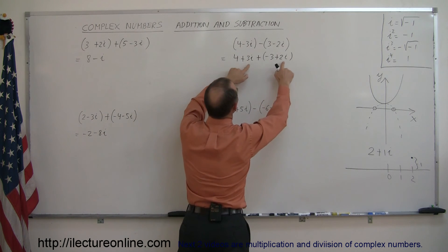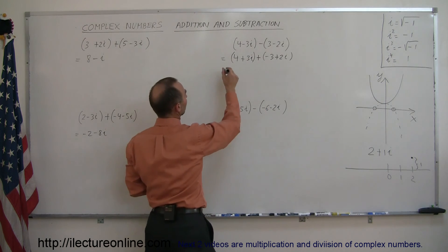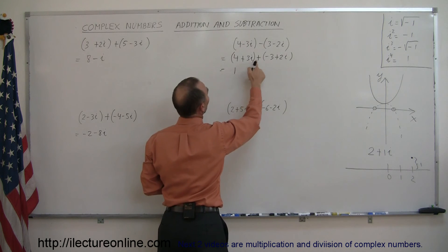You add the real parts together and you add the imaginary parts together. I will go ahead and continue with the parentheses there, so this is equal to 4 plus minus 3, which is 1, and 3i plus 2i is plus 5i.